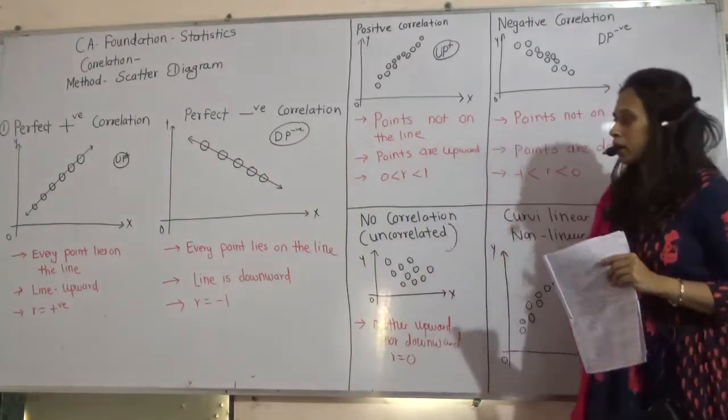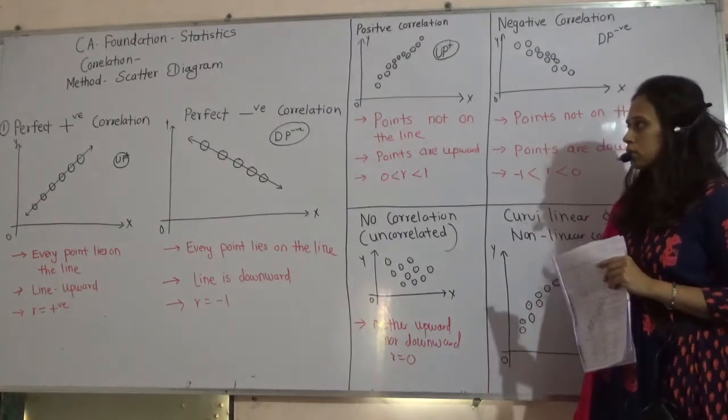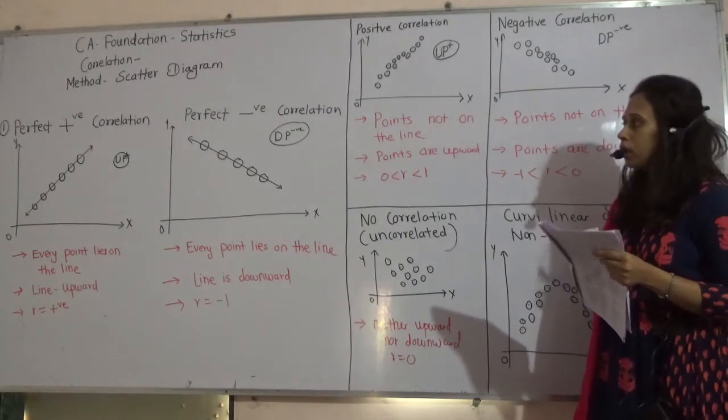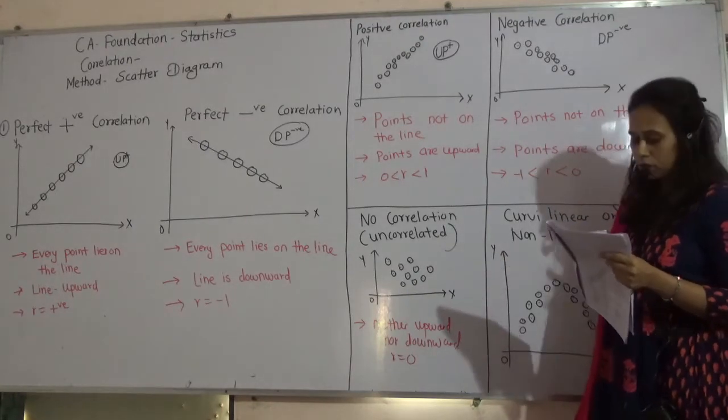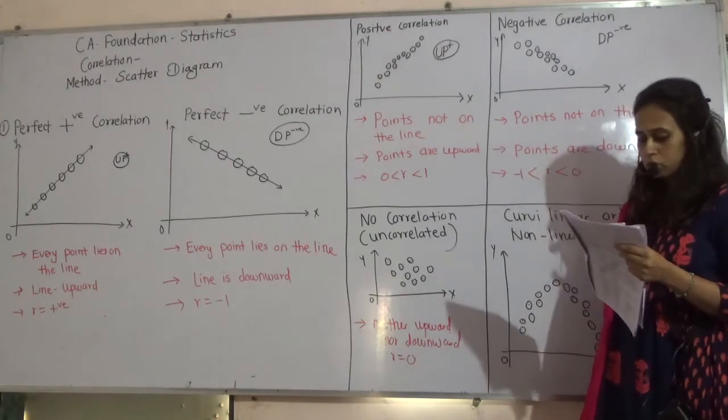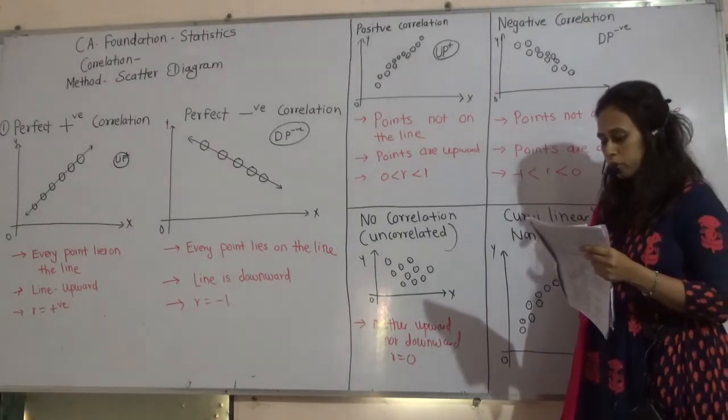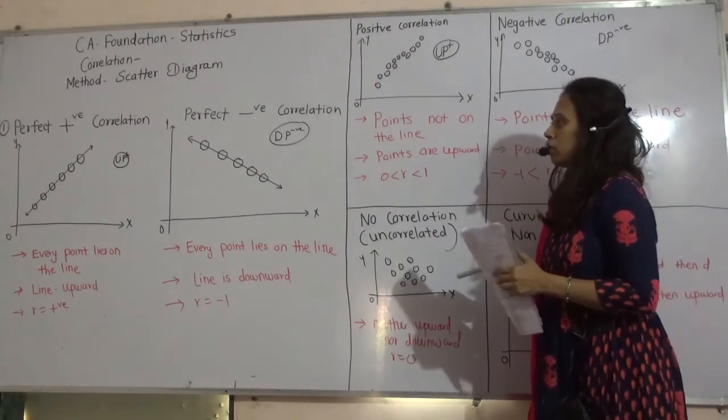What is Scatter Diagram? Mostly theoretical questions asked on this basis. It is Graphical Method. You can see, I have shown everything in graphical form. It is used to study only type of correlation. Direction of plotted points is used to decide type of correlation.